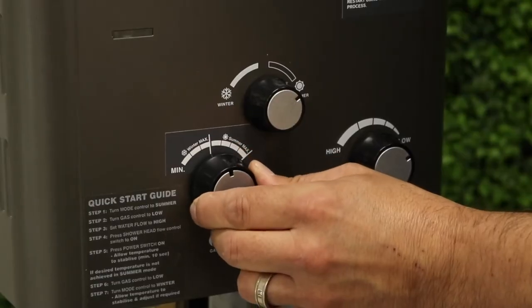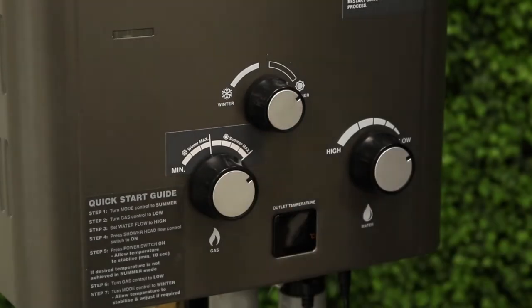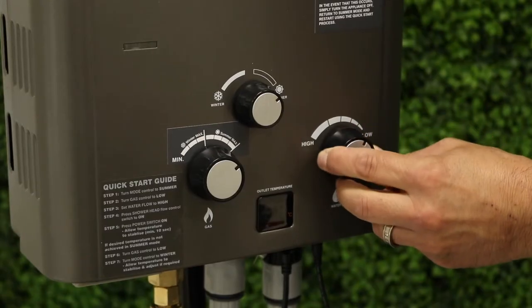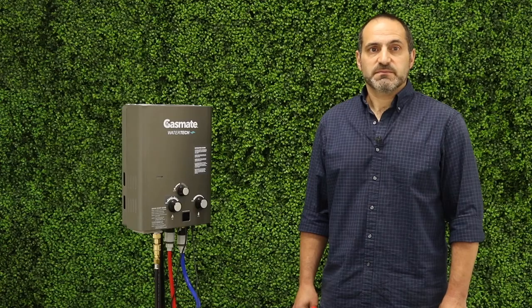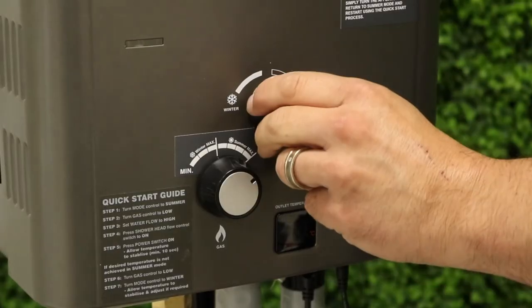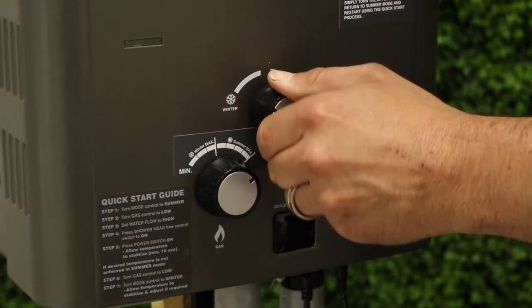To adjust the water temperature simply adjust the gas dial from minimum to maximum remembering that there is both a winter and summer maximum. Adjusting the water flow will also change the temperature. The slower the water flows through the unit the higher it will heat. You can also use winter mode to increase the temperature of the water from the same source water.